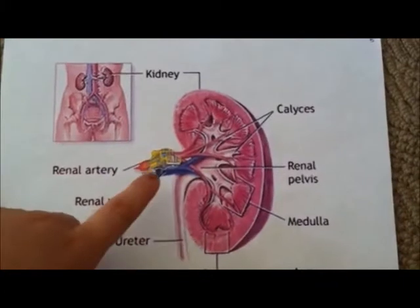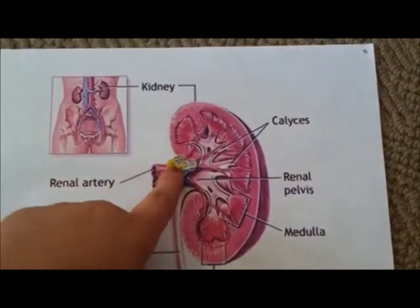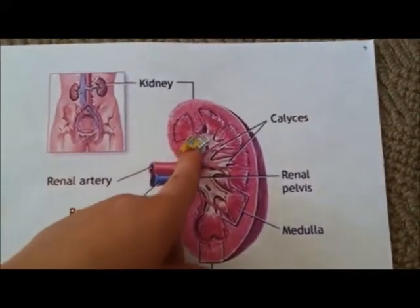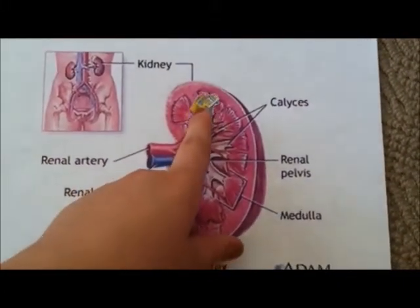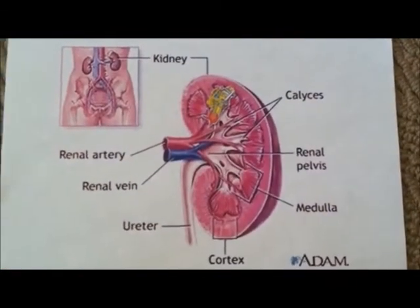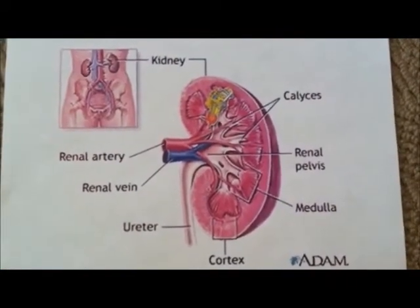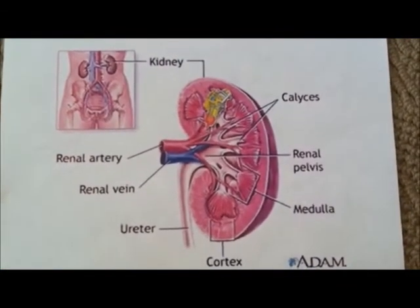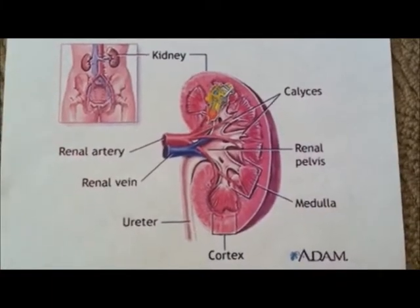The class makes its way toward the nephron, the site of filtration, reabsorption, and secretion, via many smaller arterioles that extend into the cortex — the thick outer layer of the kidney.